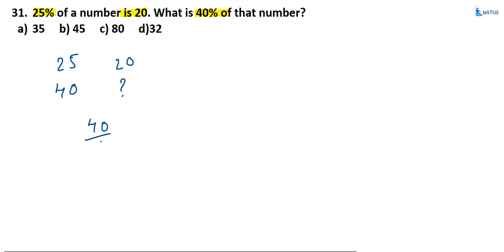So this is equal to 40 by 25 into 20. This gives us 4, this is 5, and this is 8. So that is equal to 32. Option B is the correct answer.